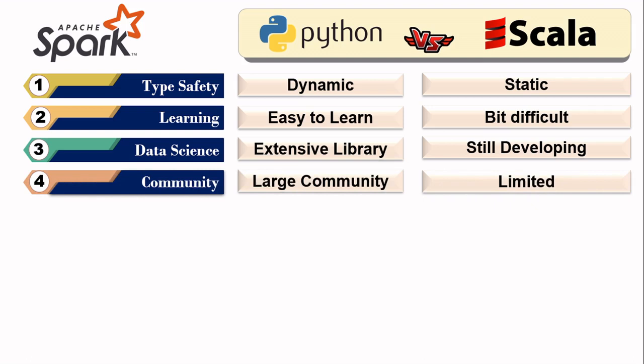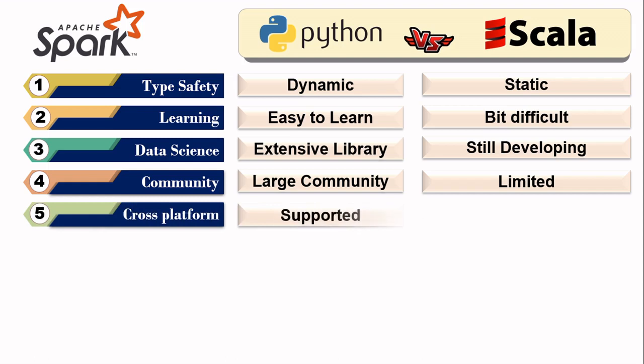Regarding community support, Python has a large community, so whenever you have queries during development, you can easily get help and fix issues. In Scala, you may be the first user to encounter certain errors, and sometimes you may find bugs related to Java extensions.